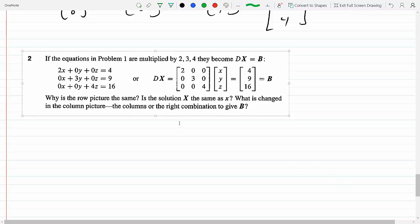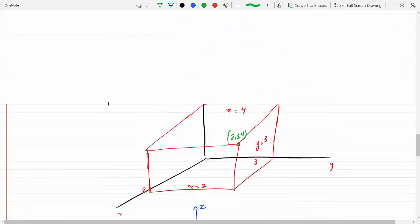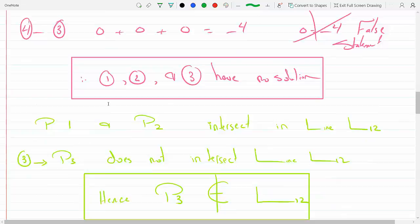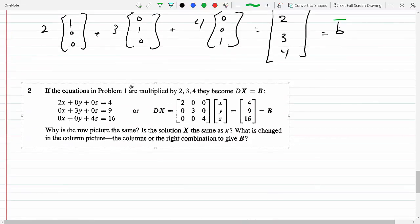So here we multiply the equations in problem one by 2, 3, 4. So instead of 1, 0, 0, we have 2, 0, 0. This is problem one, and then the right-hand side becomes 4.